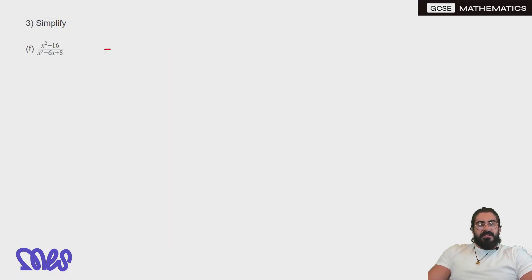On the numerator is another difference of two squares: x plus 4, x minus 4. And on the bottom, we need to do a proper factorizing here.